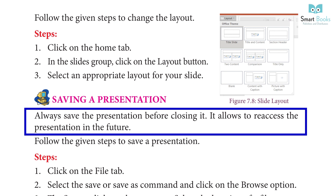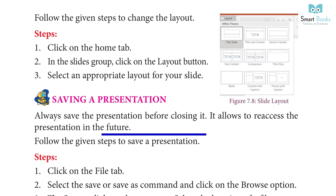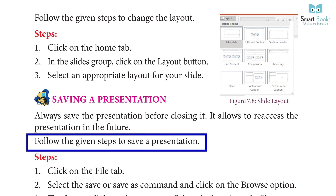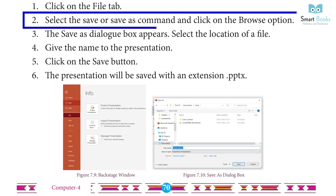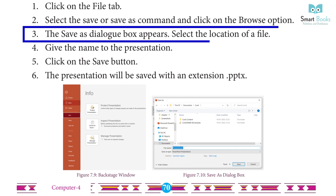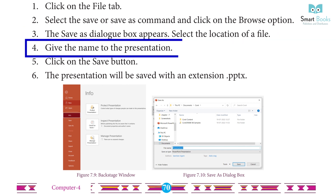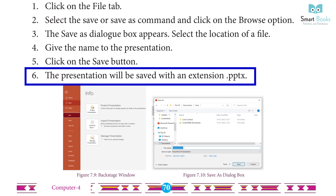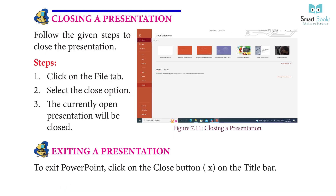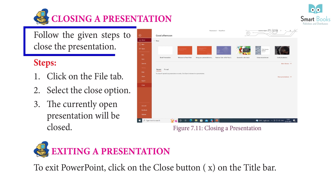Saving a presentation: Always save before closing. Follow these steps: Step 1: Click on the File tab. Step 2: Click Save or Save As, then click Browse. Step 3: The Save As dialog box appears — select the location. Step 4: Give a name to the presentation. Step 5: Click the Save button. The presentation will be saved with the extension .pptx.